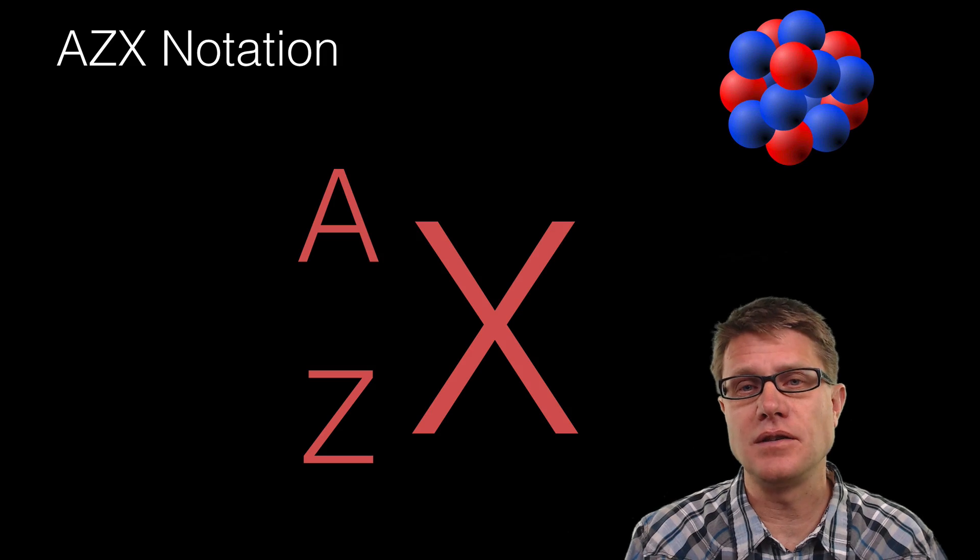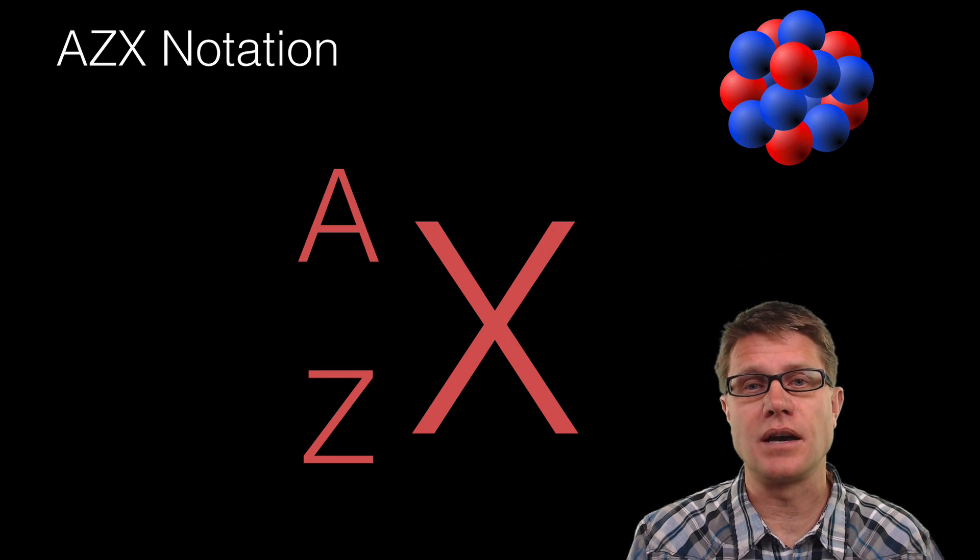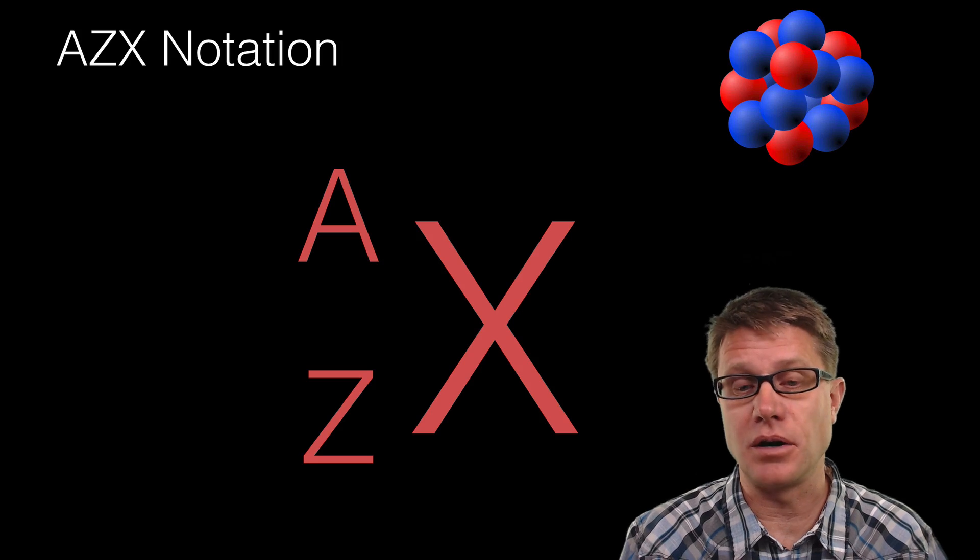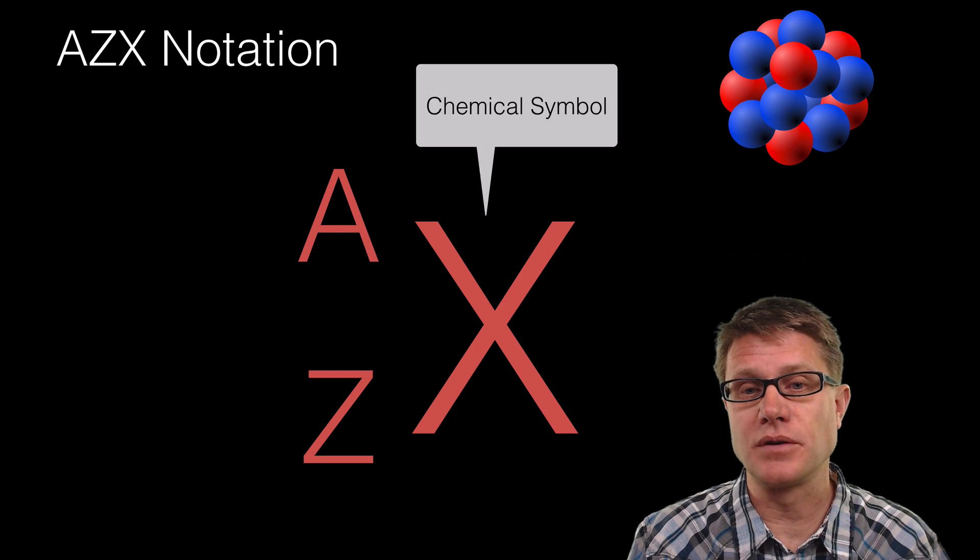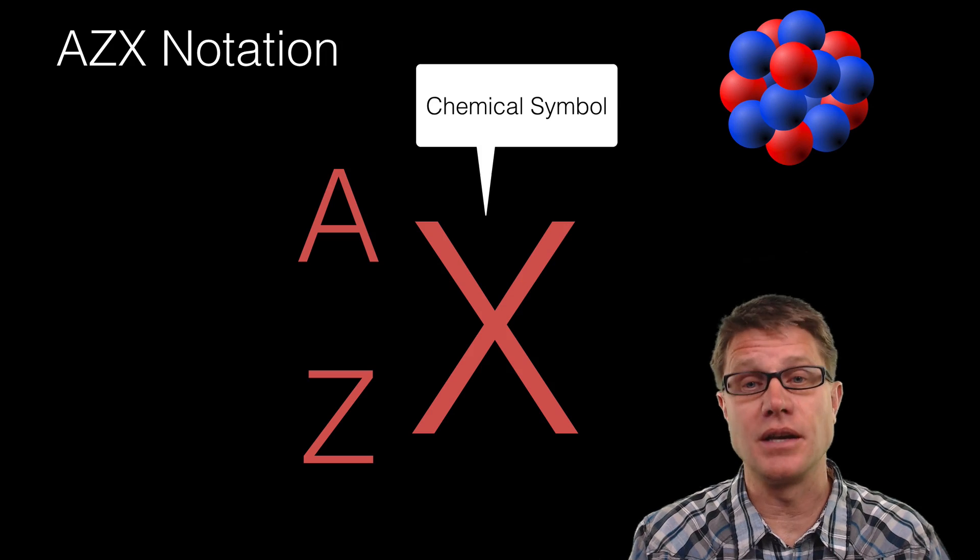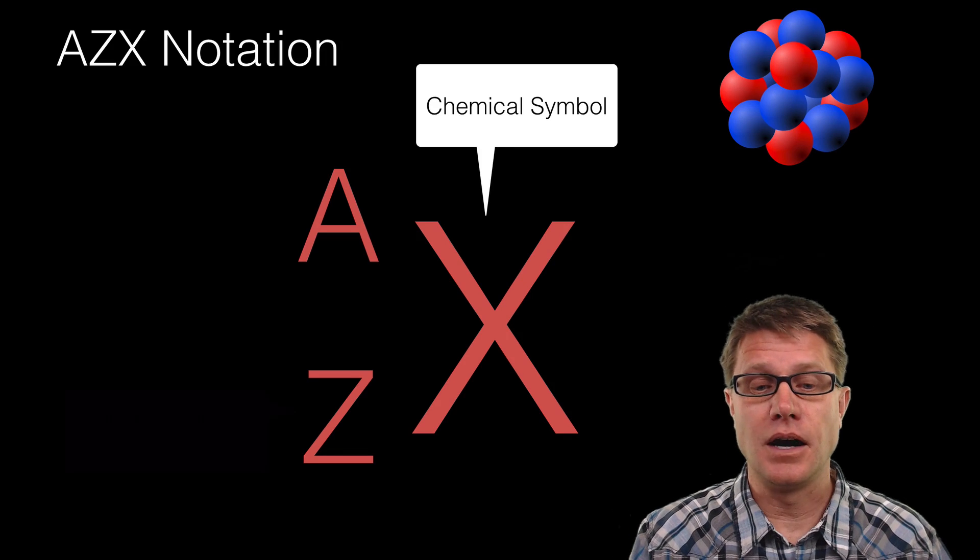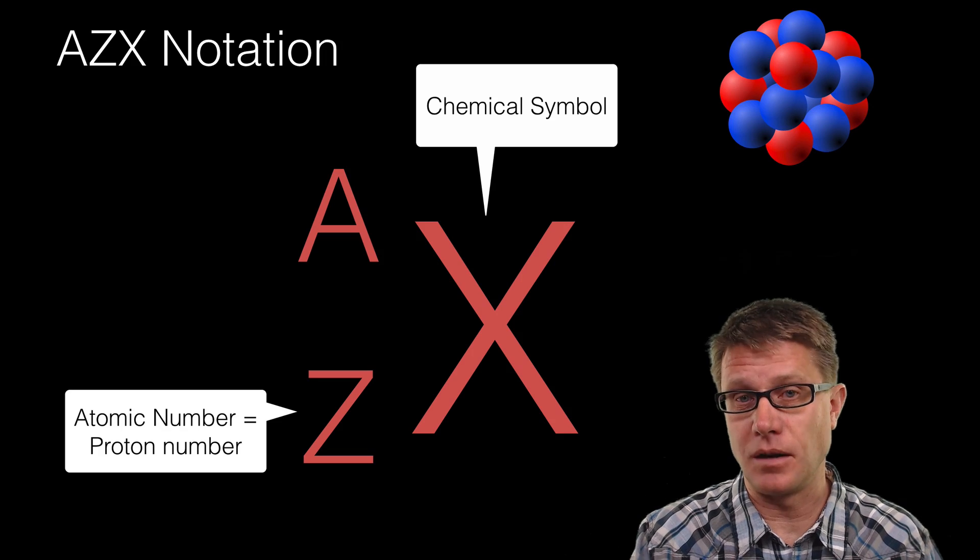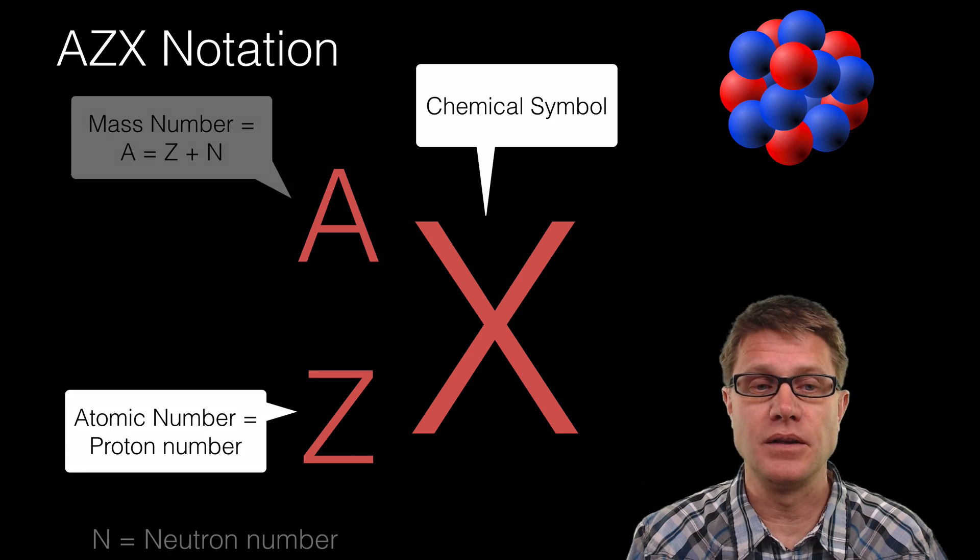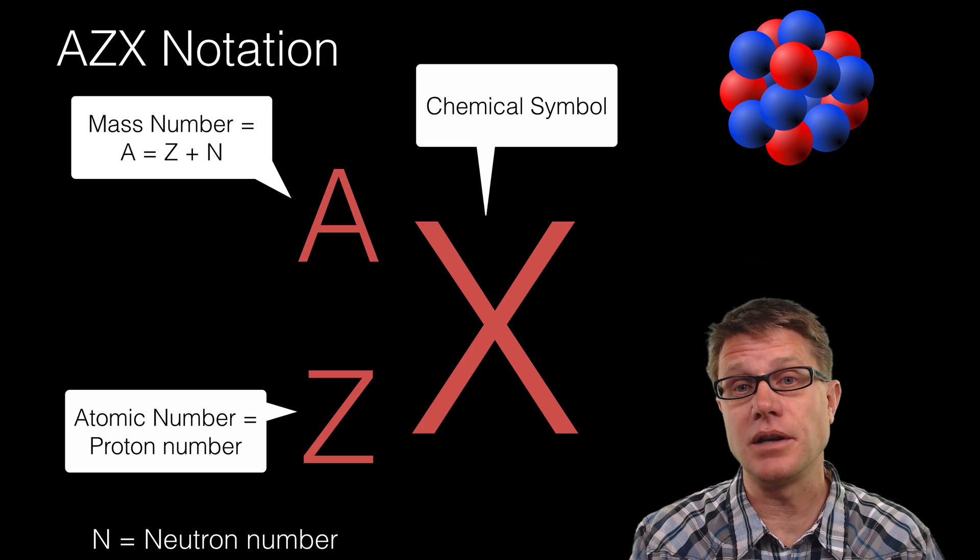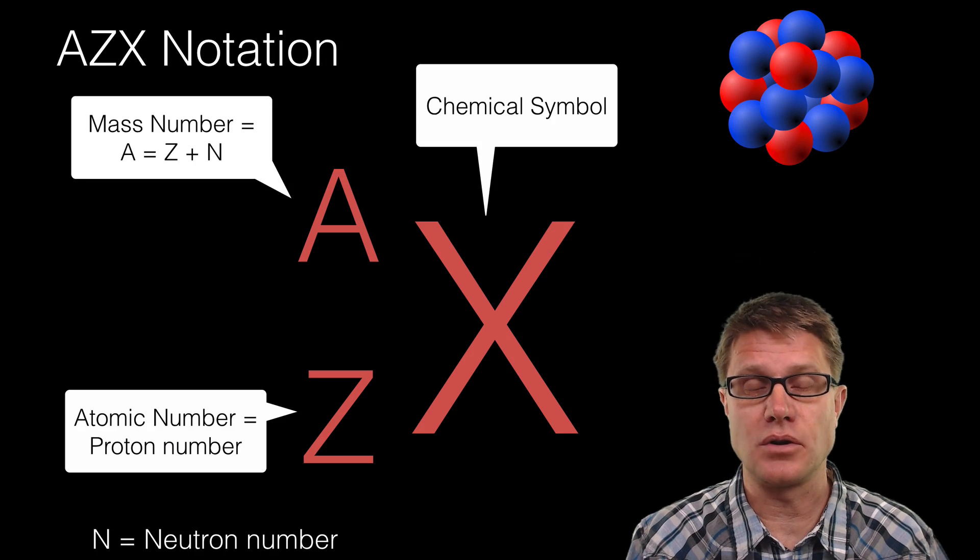Before we get to that you should understand AZX notation which is a way to write down the number of protons and indirectly the number of neutrons inside any particle. And so the X will be representing the chemical symbol. But it could represent a form of radiation like an alpha particle. Z is going to represent the atomic number, the number of protons. That is going to be the numbers that we see on the periodic table. And then A represents the mass number. So it is the number of protons plus N which is going to be the number of neutrons.